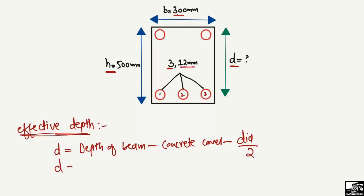To find the effective depth, it equals the depth of the beam — 500 millimeters — minus the concrete cover. The concrete cover is the distance from the extreme edge of the beam to the steel bar. In beams it is typically 25, 30, or 35 millimeters, depending on different factors and codes. In our case, we take the concrete cover as 25 millimeters.